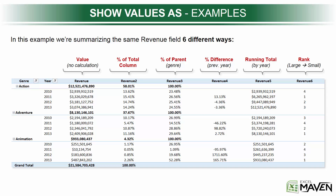A similar cut of the data uses a calculation called Percent of Parent, where genre is the parent. This puts a slightly different spin on it so that you can see the relative composition of revenue by year within each genre. For adventure films, for instance, I can easily see that 2013 drove the largest share at just under 30%, and 2011 was a relatively slow year, only driving 14.51%.